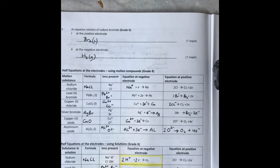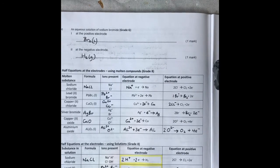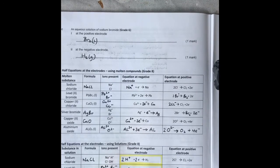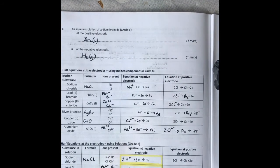At the positive electrode, because there's no halogen present here or here, oxygen is given off. That happens when four hydroxide ions, four OH- ions, form oxygen and water and lose four electrons.